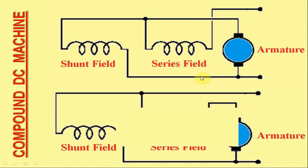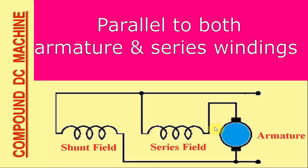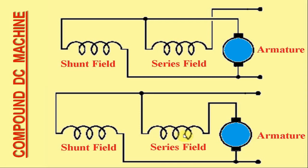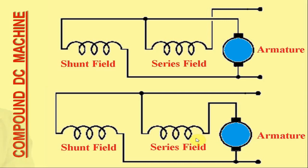On the other hand, in another typical representation of a compound DC machine, you may easily notice that the shunt field winding is in parallel to both the armature winding and series field winding. With this sort of field winding arrangement, the machine is called a long shunt compound DC machine. Besides these, the compound DC machines can further be subclassified into cumulative compound and differential compound DC machines.